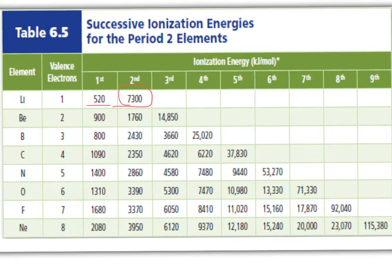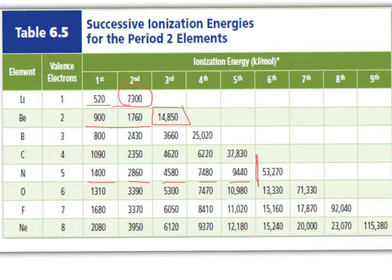Beryllium has two valence electrons, so the first two come off at 900 and 1,760 kilojoules per mole. But to get that third electron, when you go into an inner level, it suddenly takes 14,850 kilojoules per mole. And if I jump down to nitrogen, I see a steady increase in ionization energies until between the 5th and 6th, where I see a huge increase.